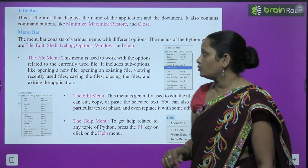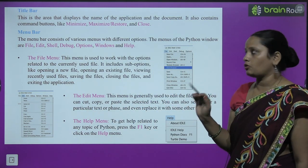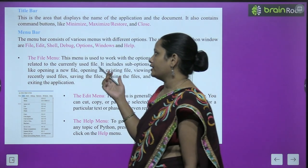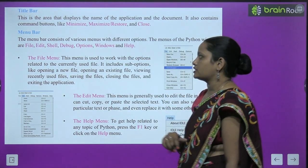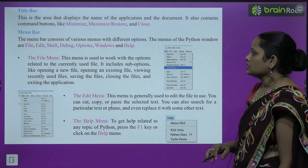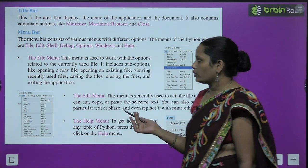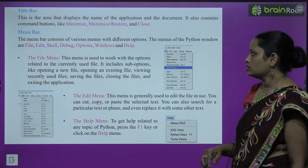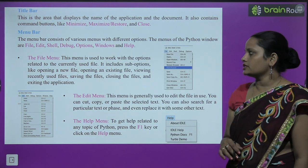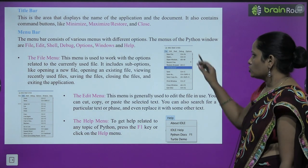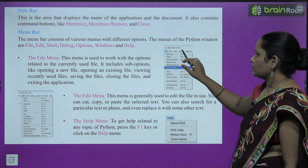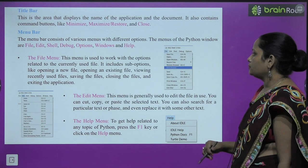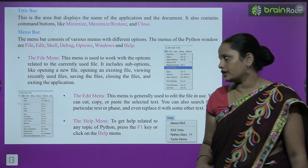Then comes the menu bar. The menu bar has many components: File, Edit, Shell, Debug, Option, Windows, etc. The File menu is used to work with options related to the current file — in it you get options like New, Open, Open Module, Recent Module, Path Browser, Save, Save As. The Edit menu contains all editing options such as Undo, Redo, Select All, Cut, Copy, Paste, Find, Find Again, Find Selection, Find in File, Replace, Go to Line, and others.